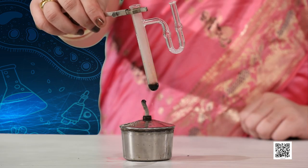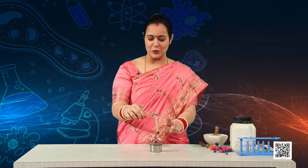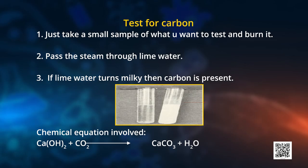Students, observe it carefully. Focus on the area of the tube. Did you see any color change? Yes, that colorless liquid changes to milky white. What does it indicate? You have studied before that whenever you pass carbon dioxide through lime water, it turns milky. And the presence of carbon dioxide indicates the presence of carbon in that substance.